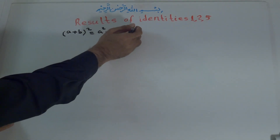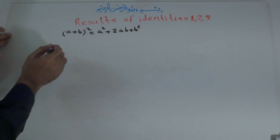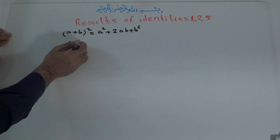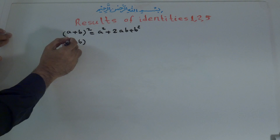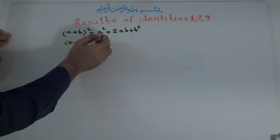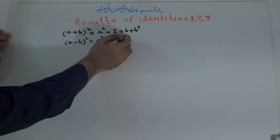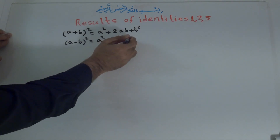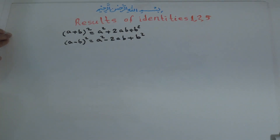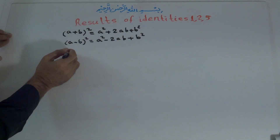...plus b to the power of two. Identity number two: a minus b to the power of two is equal to a to the power of two minus two ab plus b to the power of two.